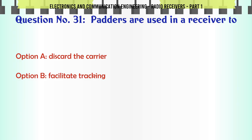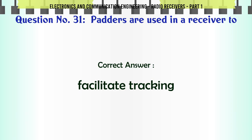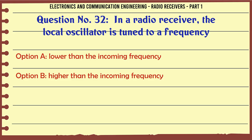Padders are used in a receiver to: A. Discard the carrier. B. Facilitate tracking. C. Filter the input signal. D. Suppress noise. The correct answer is facilitate tracking.